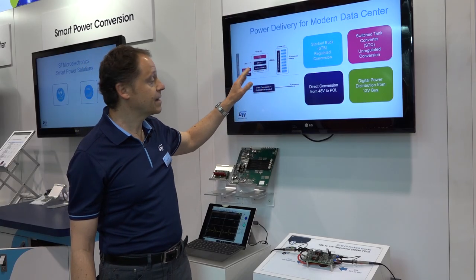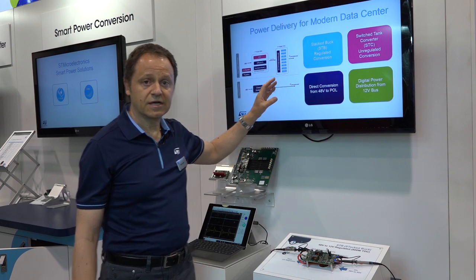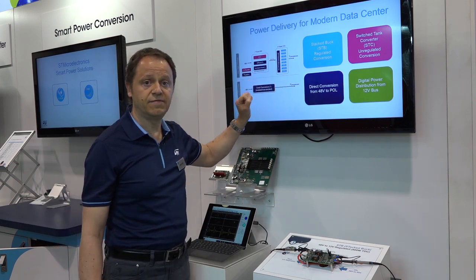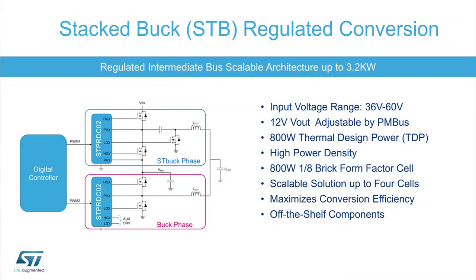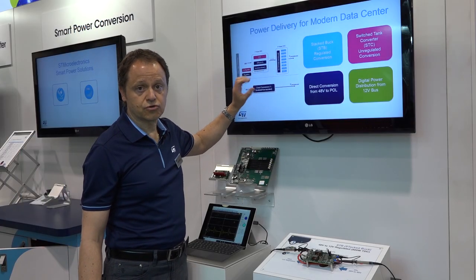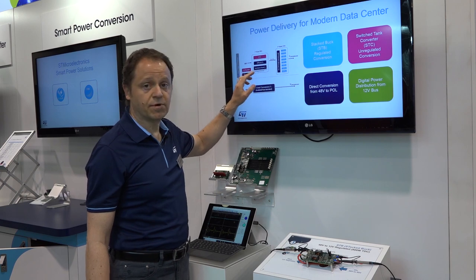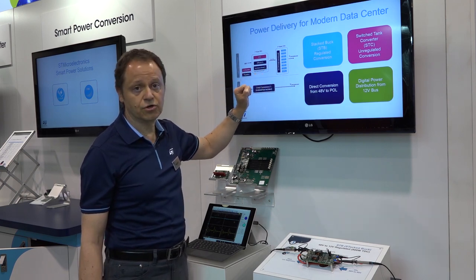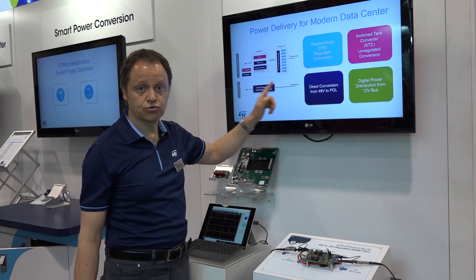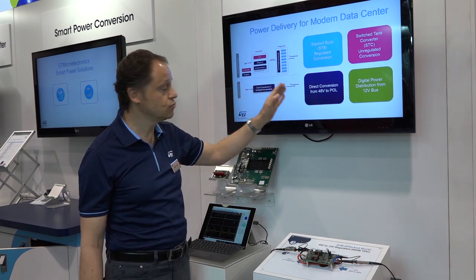We also have the regulated intermediate bus that is implemented by the newly developed STBAC, providing 800 watt in 1.8 brick form factor scalable up to 3.2 kilowatt with very good efficiency. The other class of products or architectures are transformer based and they can serve both the intermediate bus conversion or the direct conversion straight from the 48 volt down to the CPU.